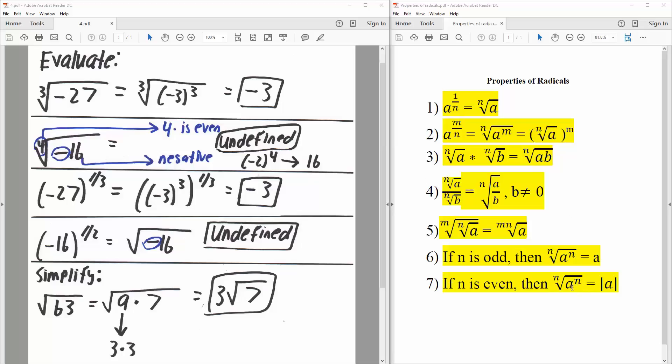We would have negative parentheses 2, which is not this, and so the answer would be undefined. Now we have this problem: negative 27 raised to the 1/3. This is essentially just doing this kind of problem.